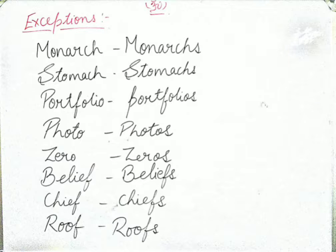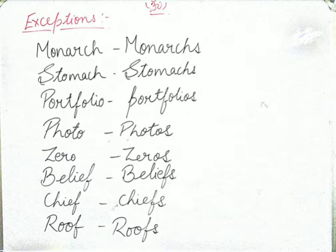These are the exceptions which we have not learned in the previous rules. The first one is 'monarch' and the plural is 'monarchs' — though it has 'ch' at the end, we only add 's', not 'es'. Similarly: stomachs, portfolio/portfolios, photo/photos, zero/zeros, belief/beliefs. For words ending in 'f', we remove the 'f' and add 'ves' — but for chief/chiefs and roof/roofs, we just add 's'.